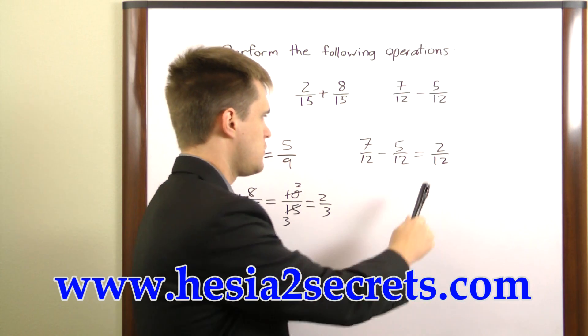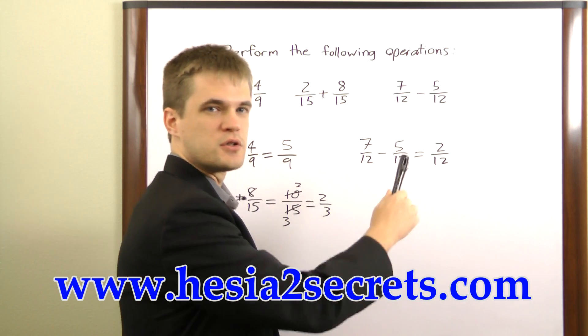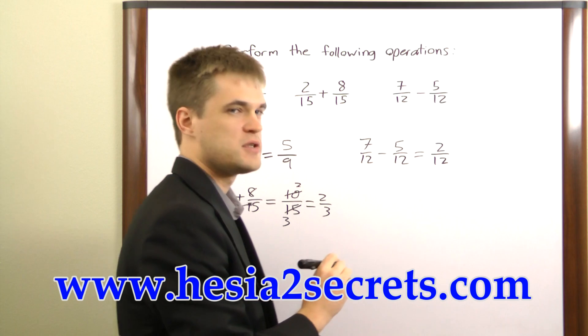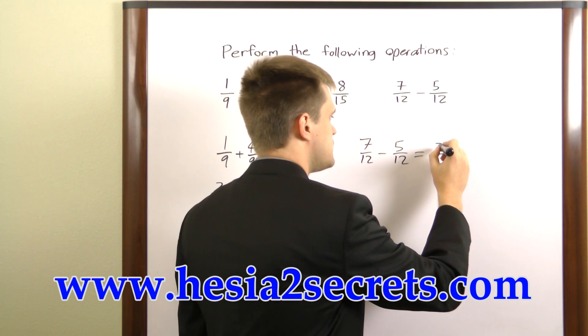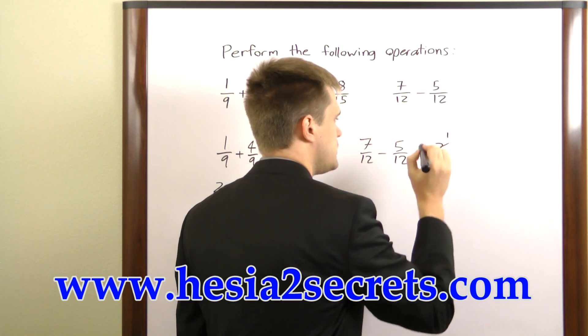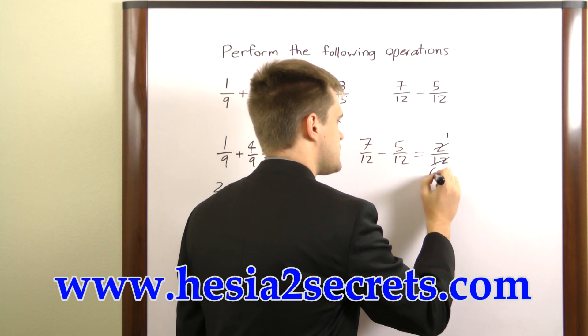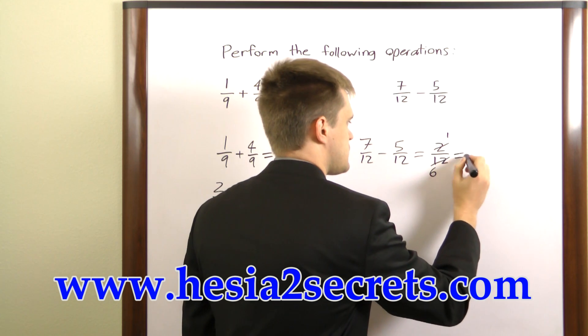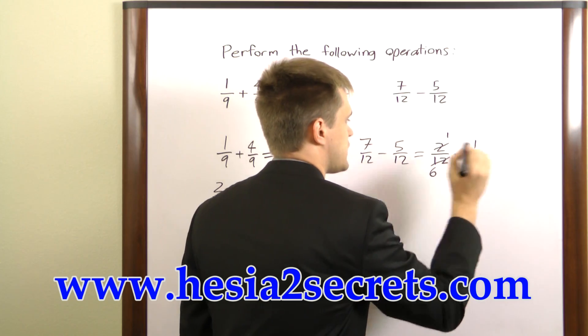Now once again we can reduce this fraction. 2 and 12 are both divisible by 2, so we'll divide 2 by 2 and get 1 and divide 12 by 2 and get 6. So this is also equal to 1 over 6.